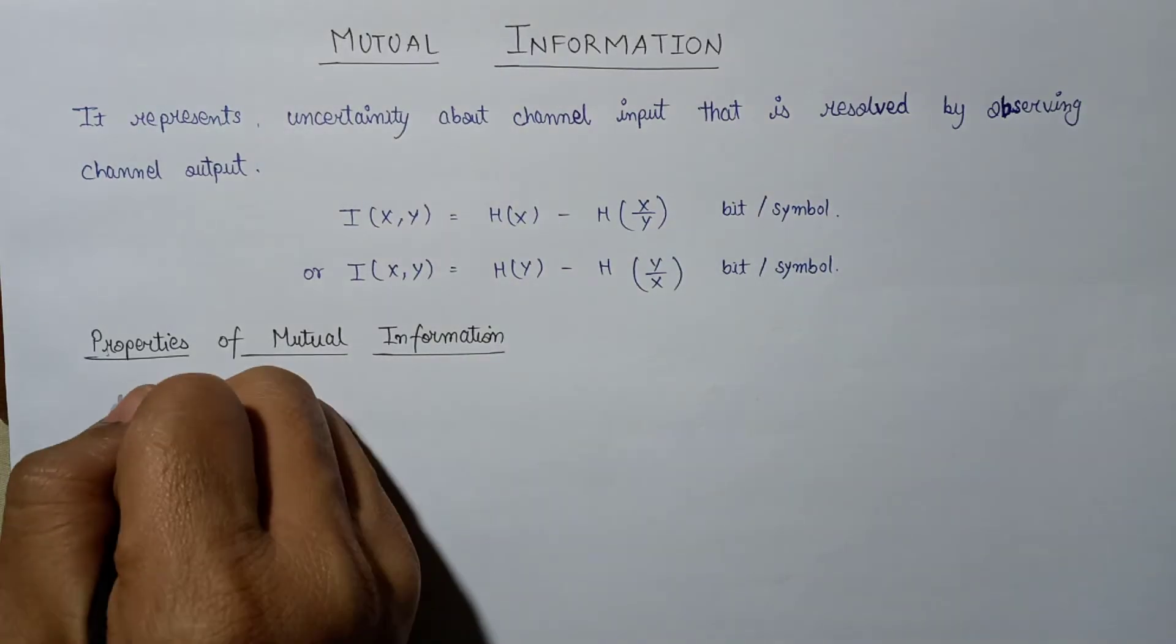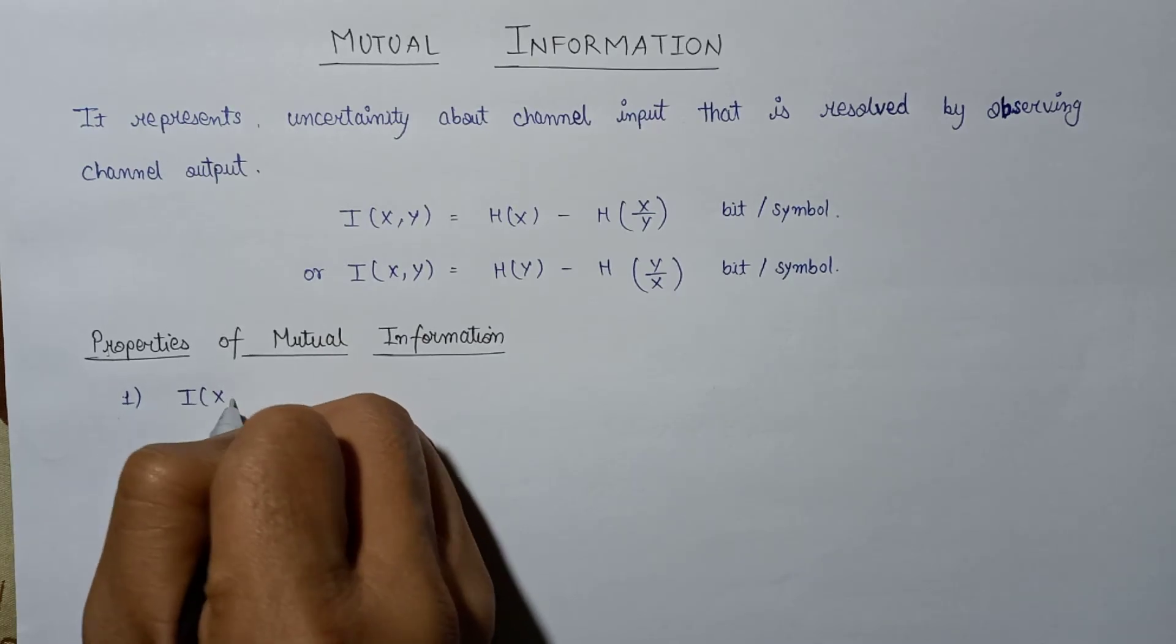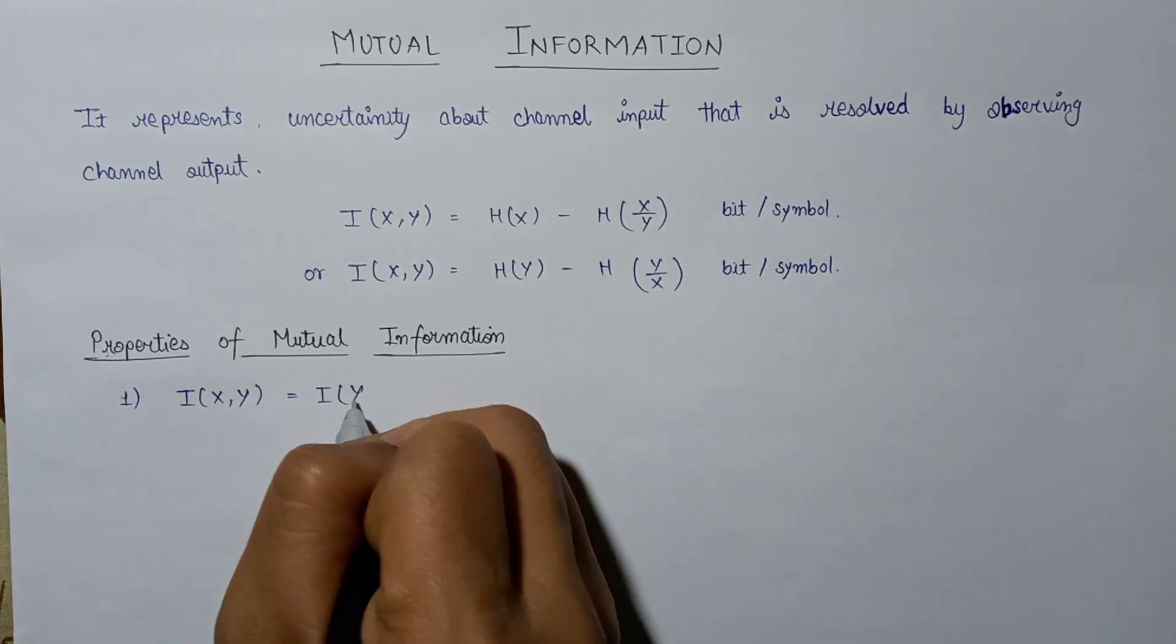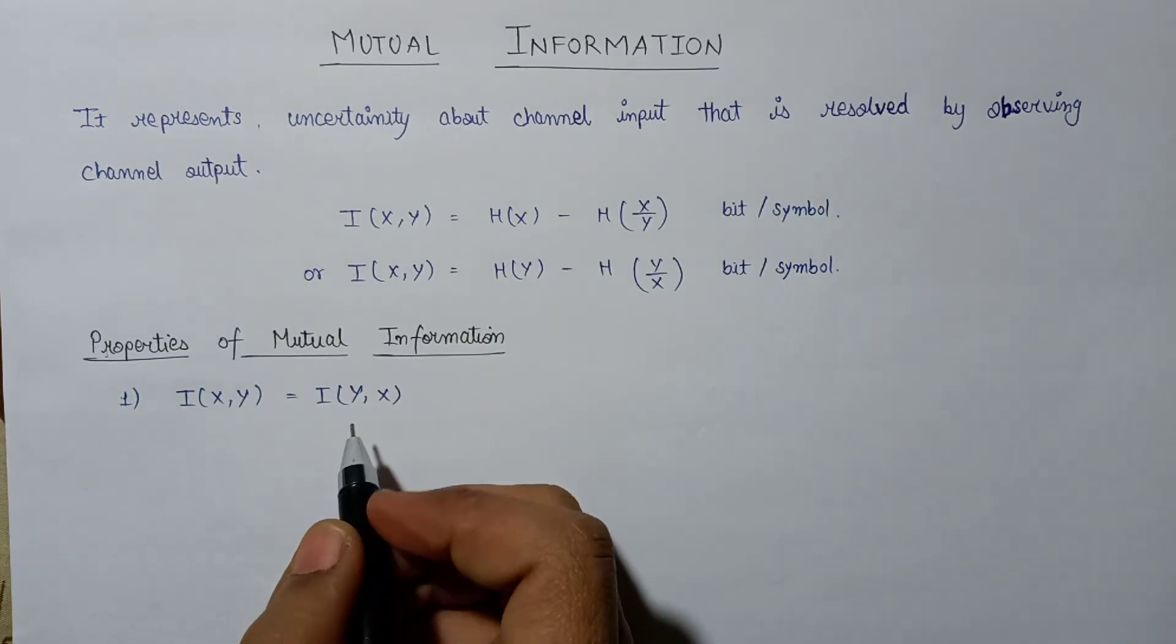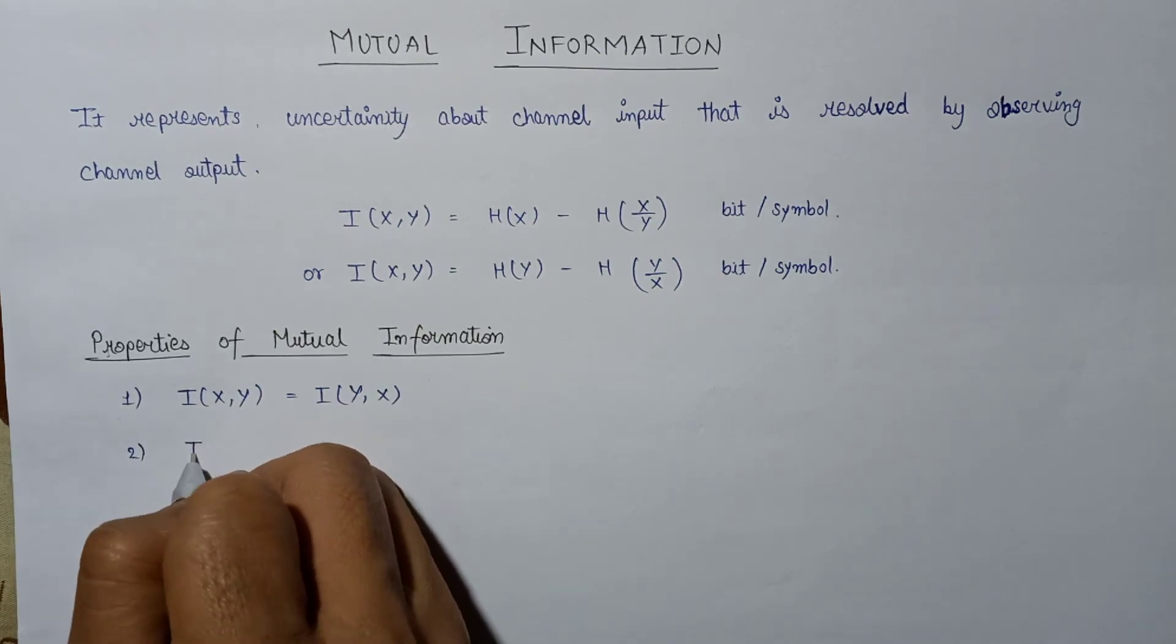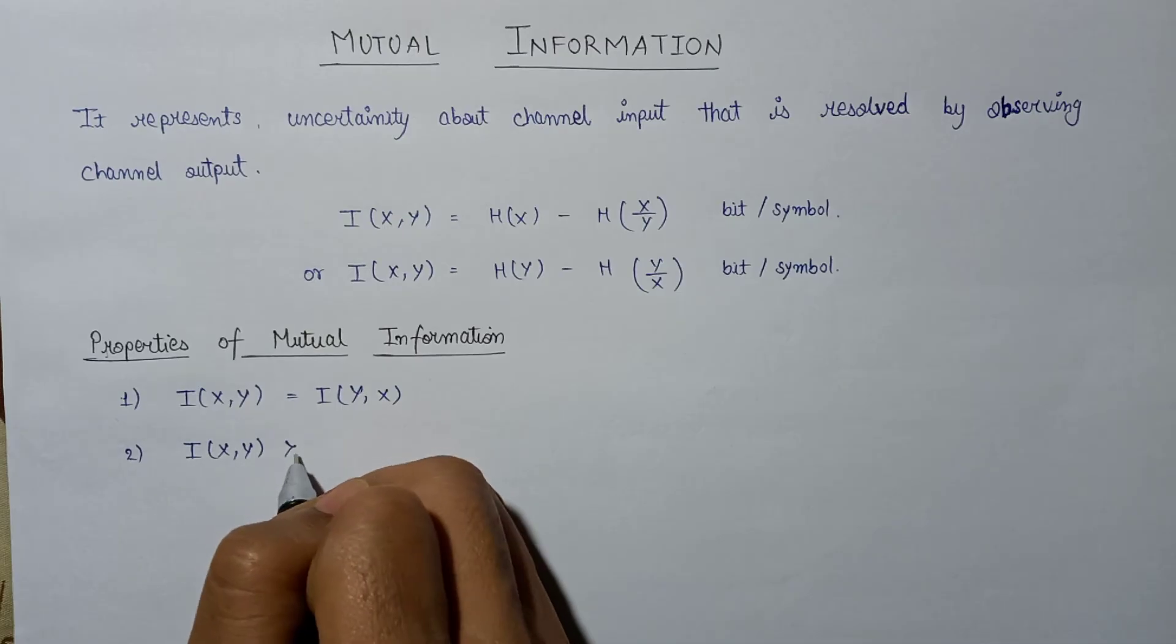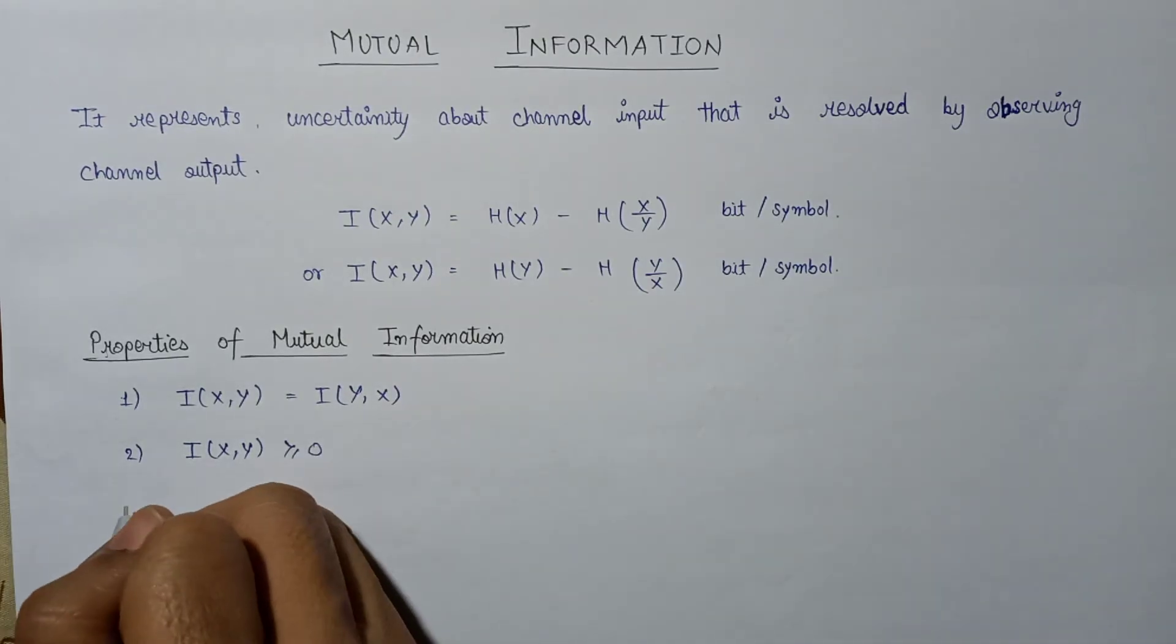The first property is I(x,y) equals I(y,x), that is, the inverse is also true. The second property is I(x,y) is always greater than or equal to zero.